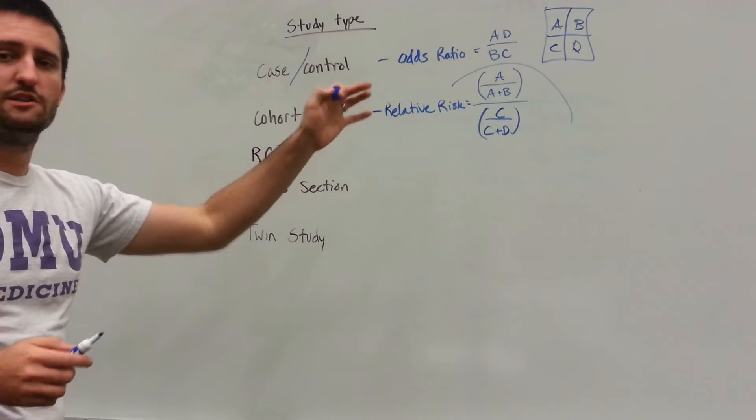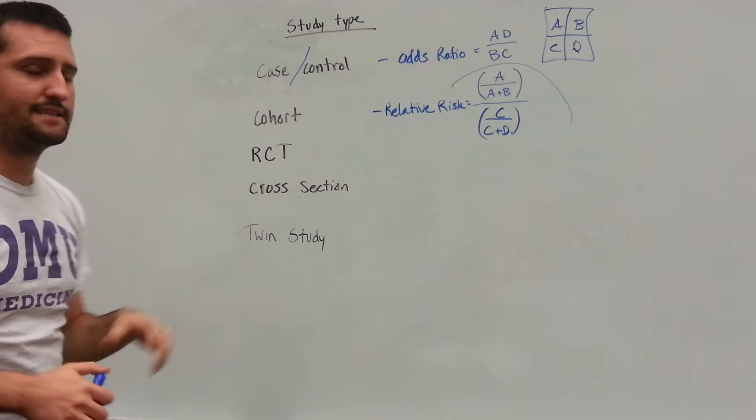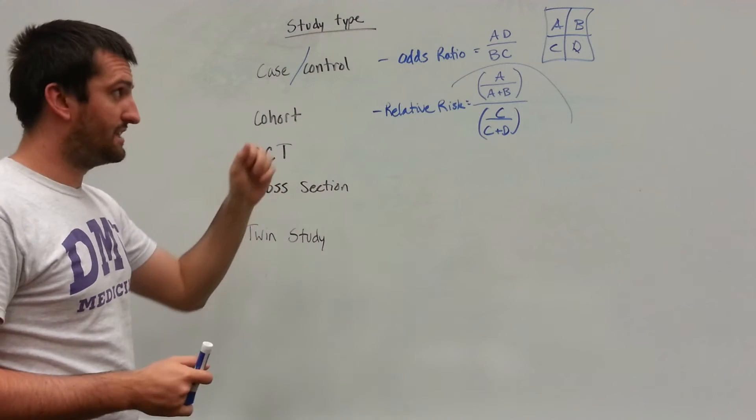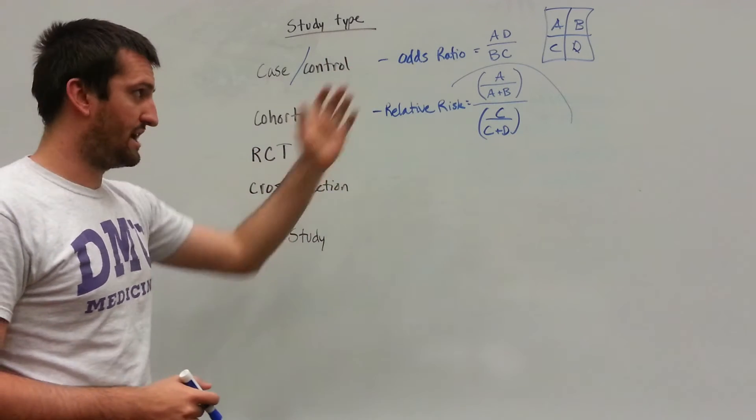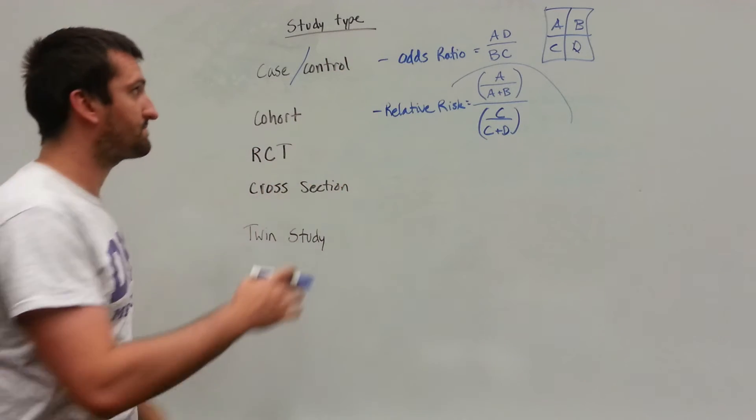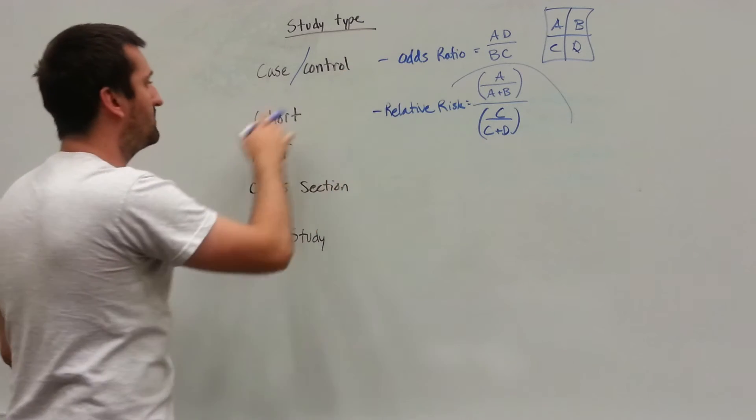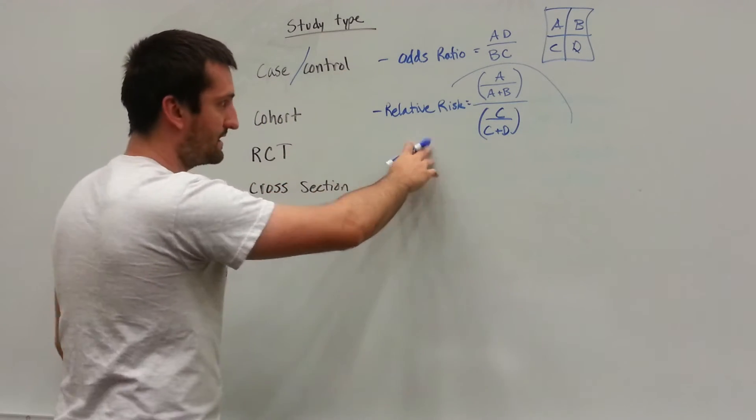If you don't understand what I just drew, be sure to look for my sensitivity specificity video. Also I have a video dedicated to creating one of those Punnett squares. However, for the case control studies, they're going to use odds ratio. For cohort studies, we're going to use relative risk.